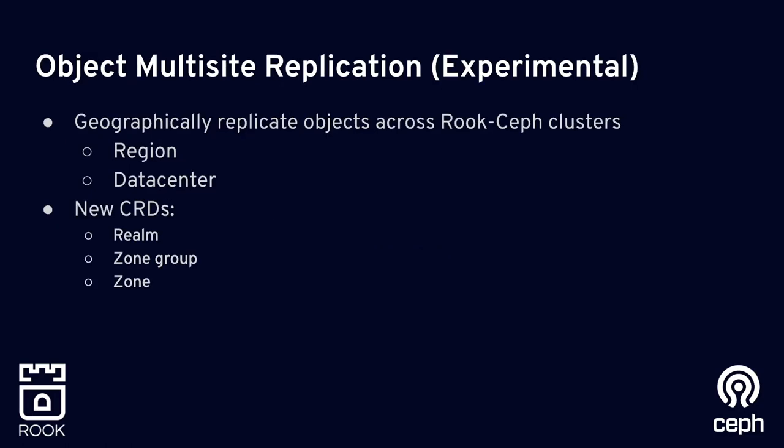On to object multi-site replication. This is a feature that has been around in Ceph for its object gateways for years, and it's probably one of the most desired features the community has been asking for — the ability to do object storage through multi-site. You may have geographically separated data centers between regions, and the idea is to replicate objects between Rook Ceph clusters that are distant from each other. We added new concepts coming straight from Ceph: realms, zone groups, and zones, which give fine granularity on how to configure this geo-replication.